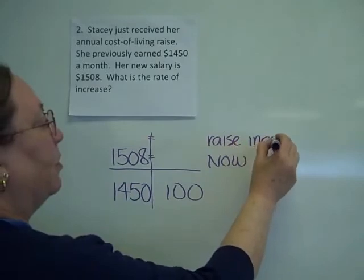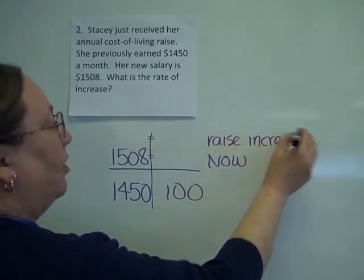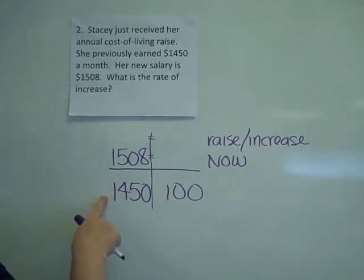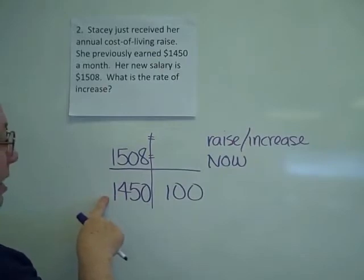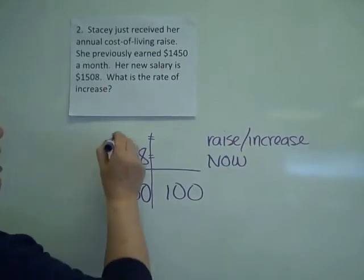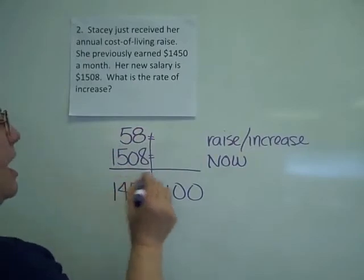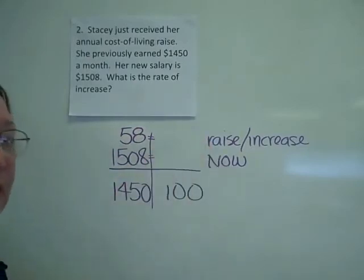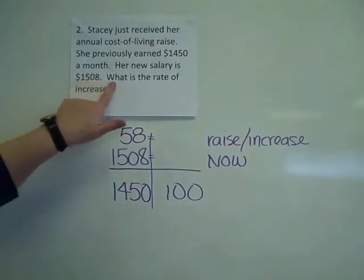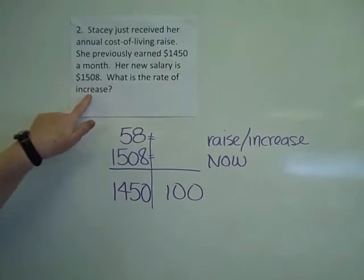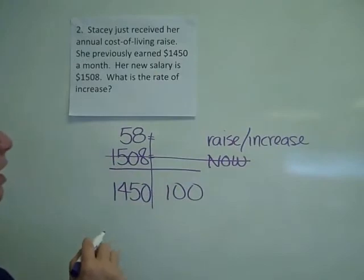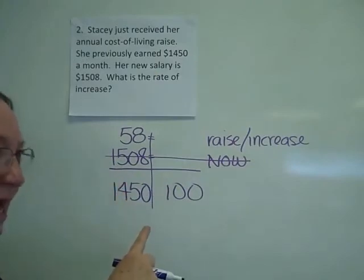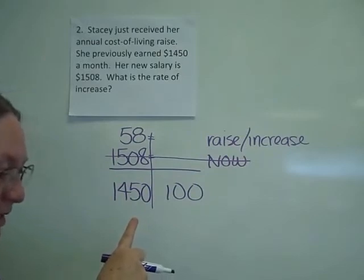I can find that just with the numbers I've got. If I subtract 1,508 minus 1,450, I'll come up with $58 as being what my raise is. At this point I need to go back to the problem and ask what are they asking for — the rate of increase. So I'm not going to use what it is now, because I only want what the increase is.